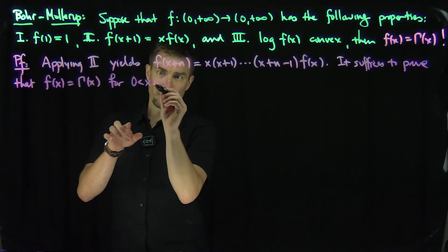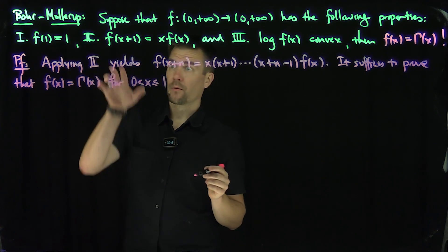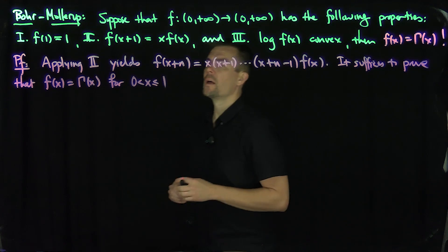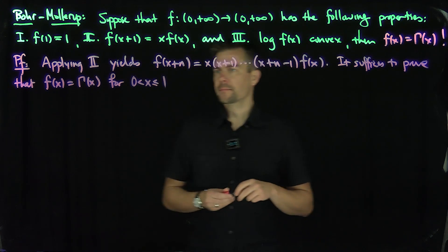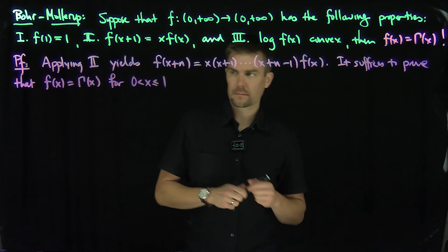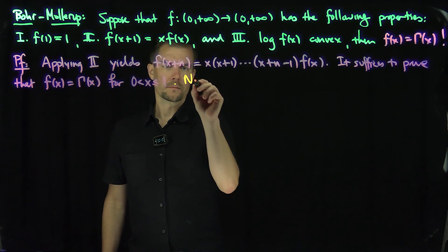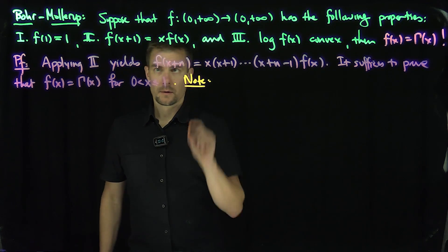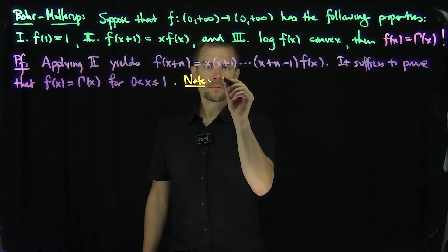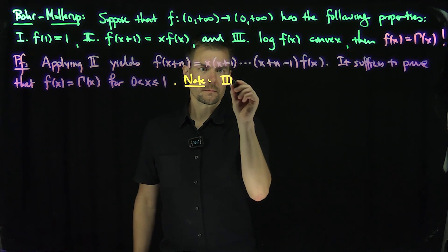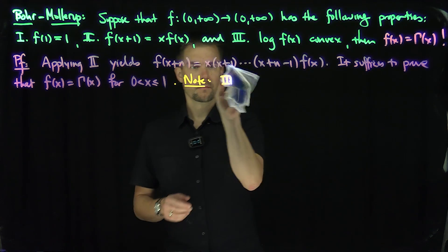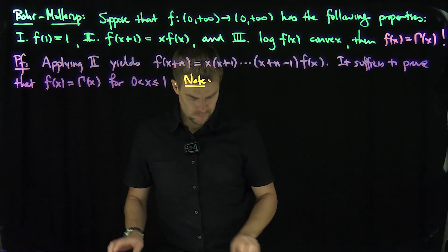We can actually include equals 1 here because we know f(1) = Γ(1) by property 1. So property 2 implies something about the natural numbers — let's observe what that is.